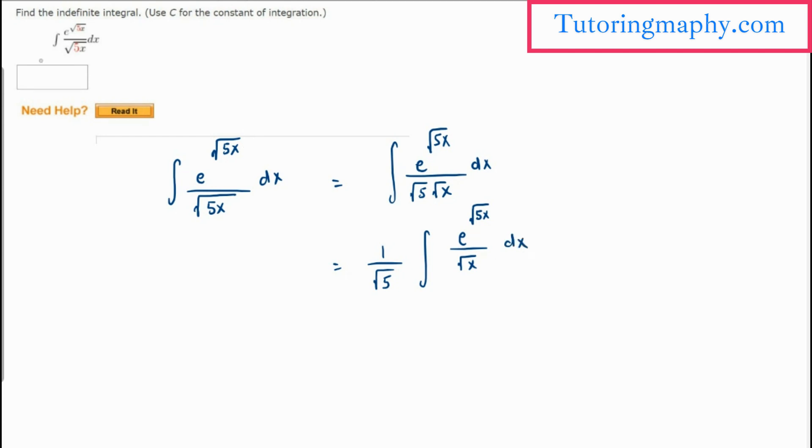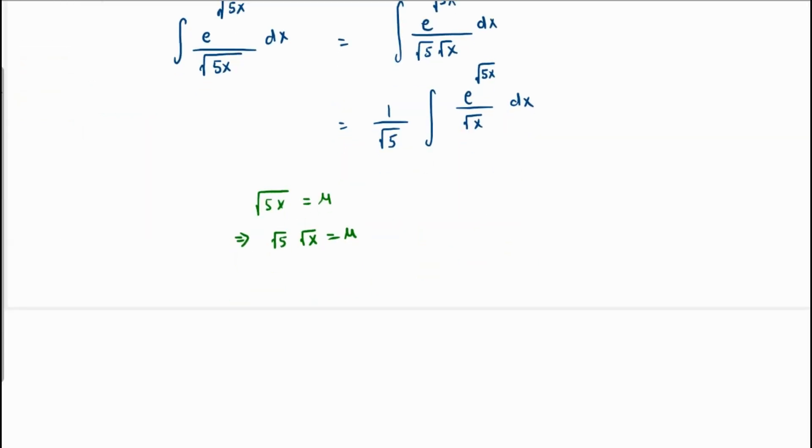Let's substitute root 5x as u. This means that root 5 times root x is basically u. If we differentiate both sides, root 5 is a constant which remains out, and then we have the differentiation of root x.